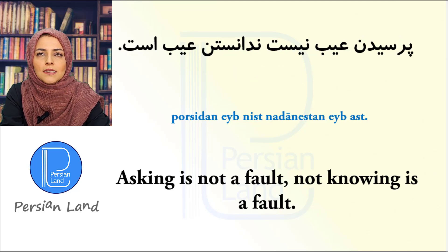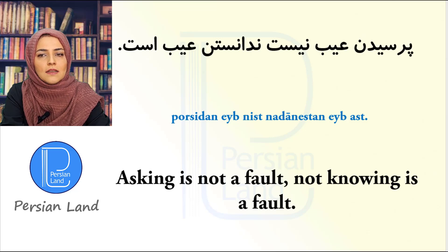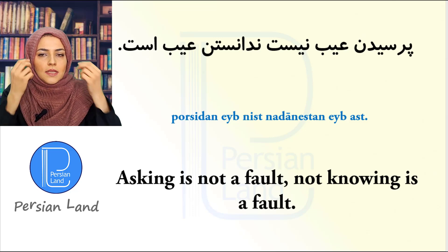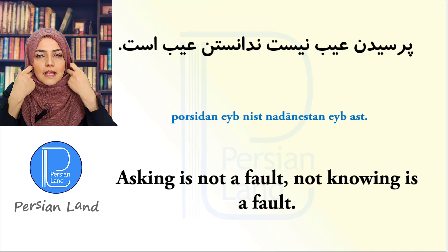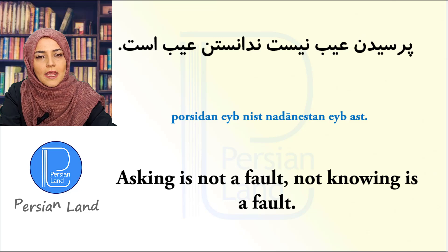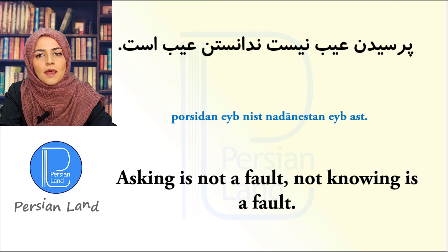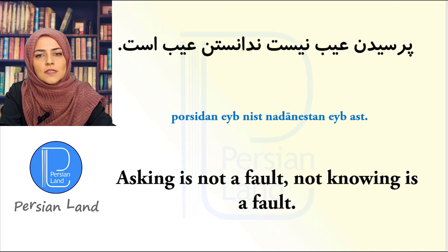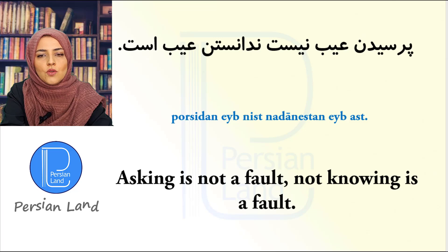پرسیدن عیب نیست، ندانستن عیب است. پرسیدن means 'to ask' or 'asking'. عیب means 'fault'. ندانستن means 'not knowing'. This is a famous Farsi sentence — it is better to ask than not to know something.